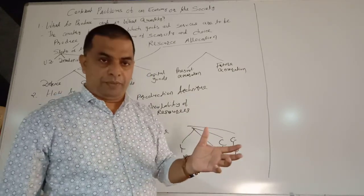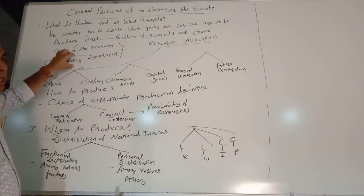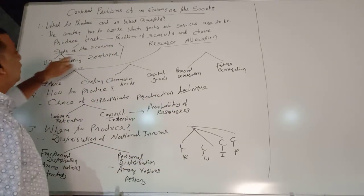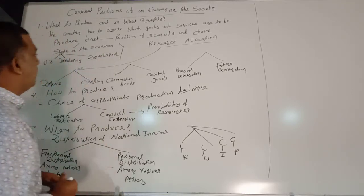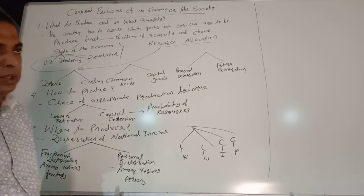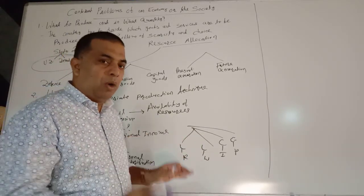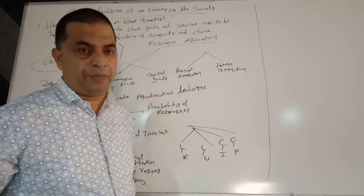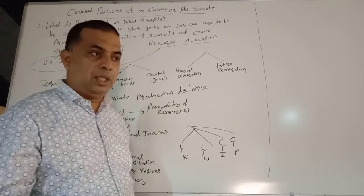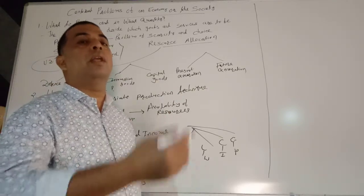The priority in production relatively depends on the state of the economy. If your economy is underdeveloped or developing, then a larger section of the population belongs to the lower income group. So you should give more preference and priority to the production of basic goods and essential goods over luxurious or semi-luxurious goods.